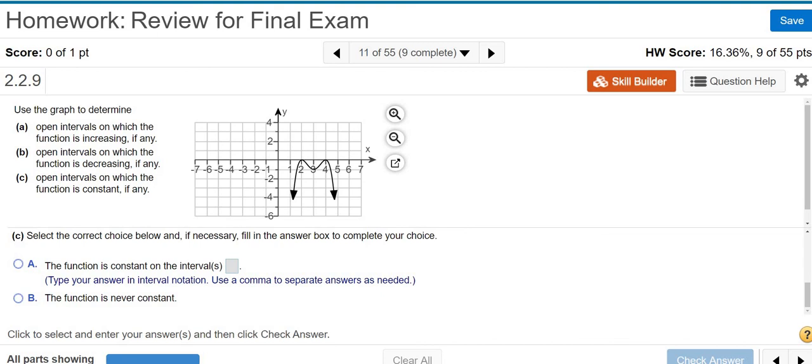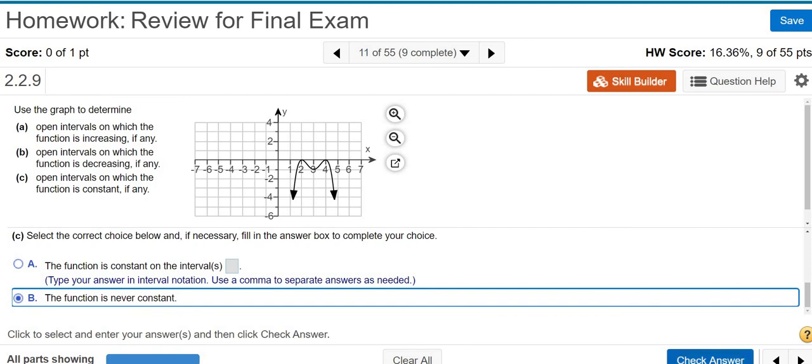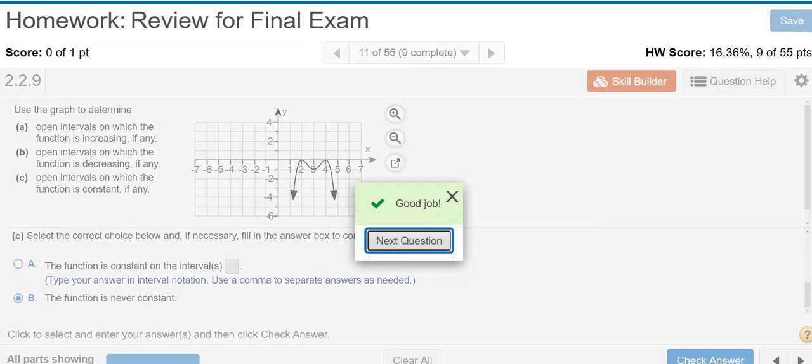Select the correct choice. Okay, constant. Next one is constant. Constant would mean it's just like a horizontal line. It's not changing. So it's never constant. So I'm going to click this one. Check answer. And that's it. Next question. Good job. I hope this video has been helpful.